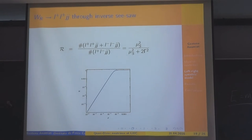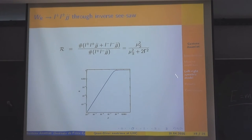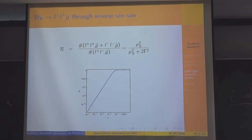I have to underline that I cannot give precise predictions because this analysis is written for one generation. I have to calculate it for three generations, which means I have to insert the mixing matrix.